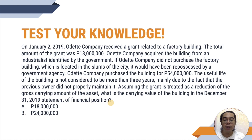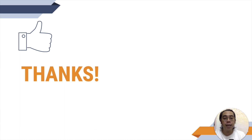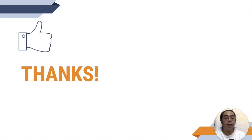A. $18,000,000, B. $24,000,000, C. $36,000,000, or D. $54,000,000. That's it for this video tutorial on accounting for government grants in accordance with PAS 20. Thank you for watching. If you liked the video, please like, comment, and share this video with your friends, classmates, or anyone you know. If you haven't subscribed yet, please subscribe to my channel for more accounting videos. See you on the next video, bye!